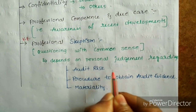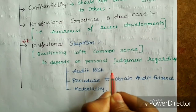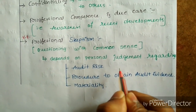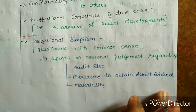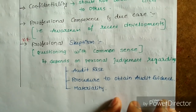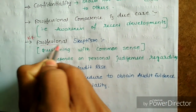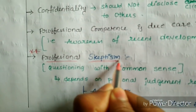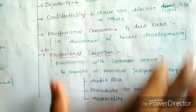Audit risk: there are three risks associated with the audit — inherent risk, detection risk, and control risk (concurrent risk). The auditor needs to ask questions with common sense. That is what we call professional skepticism. This is an important term used regularly in auditing.